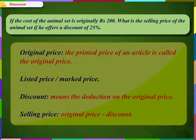Discount means the deduction made on the original price. Discount is generally given as a percent of the original price and is always calculated on the original price. Selling price is the difference between the original price and the discount. It is also called the discounted price.